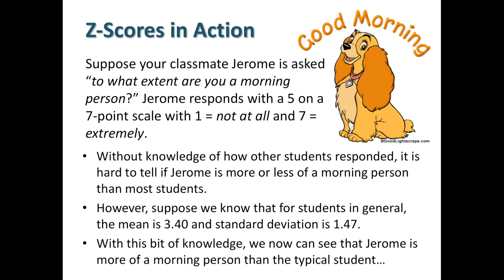Say you're trying to find out about morning people — are you a morning person or not? You go around and ask everybody on a scale of one to seven, one being 'not at all' and seven being 'an extremely happy morning person.' Your classmate Jerome responds with a 5. Without knowledge of how the rest of the class answered, it's hard to tell if Jerome is really more or less of a morning person than most students. But once we know the population mean — in this case 3.4 — and the standard deviation of 1.47, we can tell that Jerome is more of a morning person than the typical student.